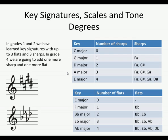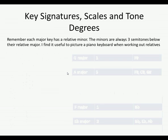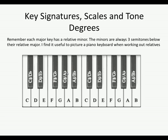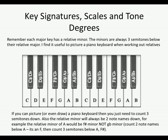You've learned all of these except for E major and A flat major, so those are the ones to concentrate on. Remember, every key has a relative major and a relative minor. The minors are always three semitones below the relative major. I find it really useful to picture a piano or keyboard when working out the relative minor — in the beginning you might want to draw one or print one out.